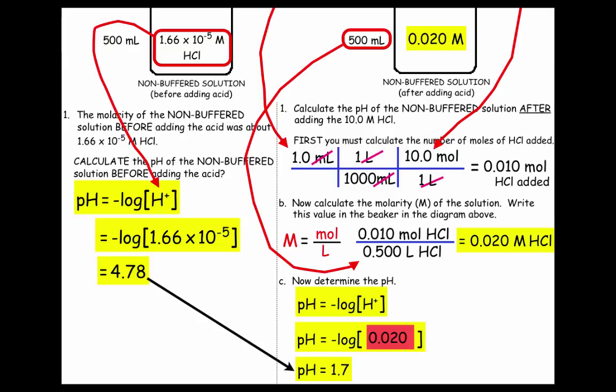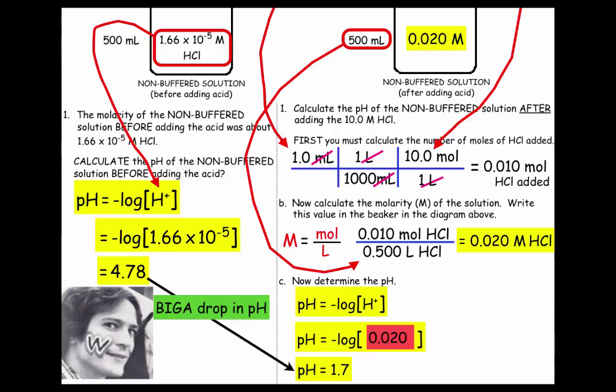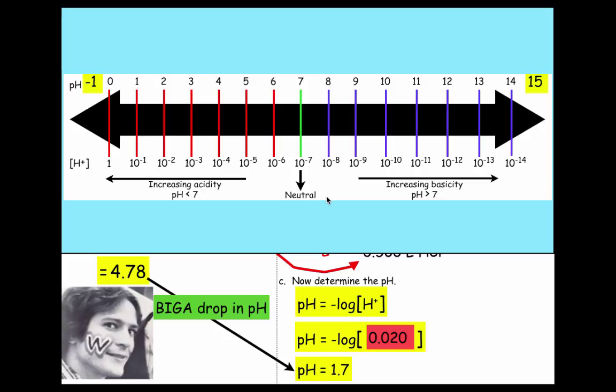It went from 4.78 to 1.7. Now that may not seem like much, and I'm going to show you how much that really is, but this is a bigger drop in pH. Maybe you don't agree with me, so I'm going to kind of show you on the pH scale. So on the pH scale, which would be given on any quiz or exam, notice this is a pH of 2. Let's just round it off. This is a pH of 5. If you'll notice on the pH scale up here, the scale changes by a factor of 10 each time.